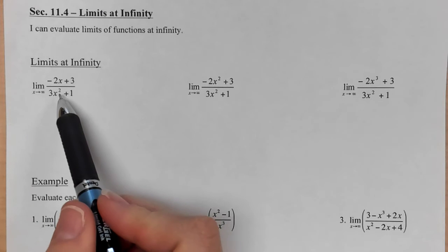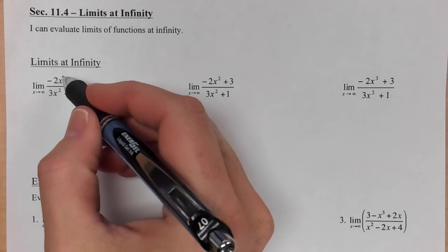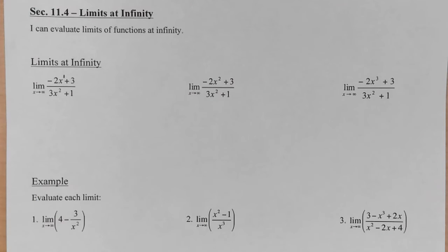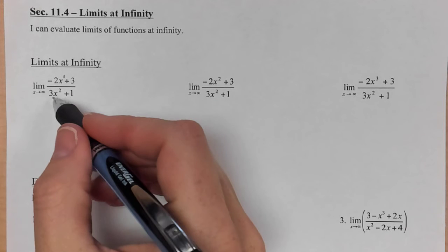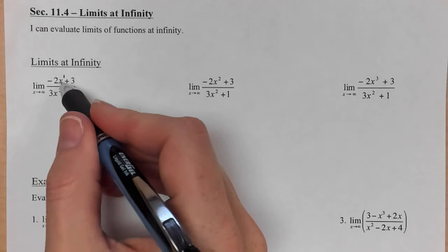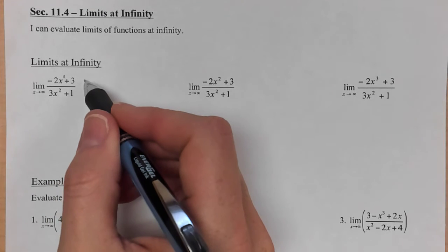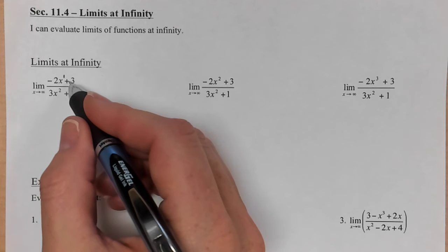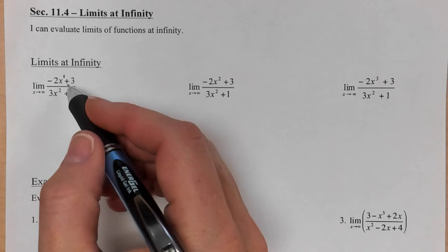So in the first one, our highest power of x is actually in the bottom. This x has a power of 1, and so the bottom kind of outranks it in that sense. What we want to think about is if we were going to put in very large numbers here. If we put in 100, and we multiplied it by negative 2, and then we added 3, we would get a negative number, and this can be pretty small, like negative 200.